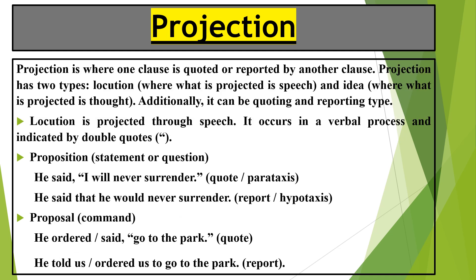Moving on to another type of logico-semantic relation — projection. Projection is where one clause is quoted or reported by another clause. Projection has two types: locution and idea. Locution is related to speech and idea is related to what you have thought. Additionally, they can be of quoting and reporting type. When speech is put in inverted commas, it is a quote; when inverted commas are removed, it becomes reporting.